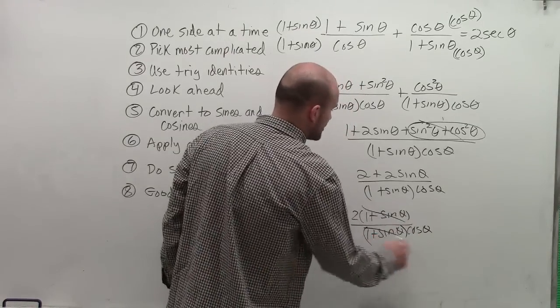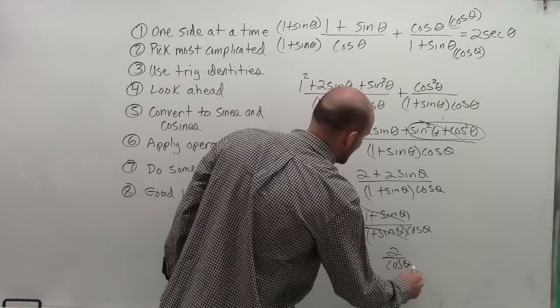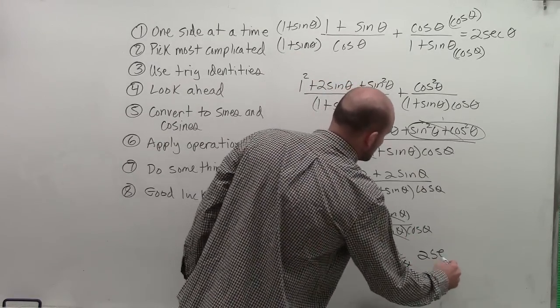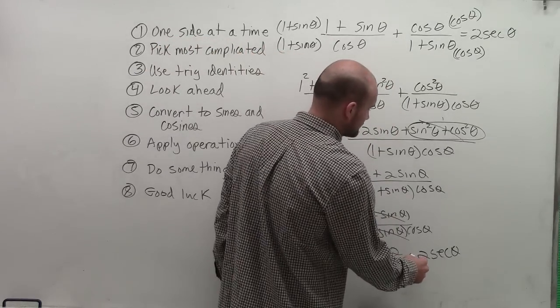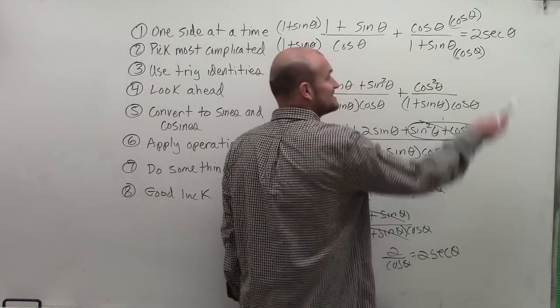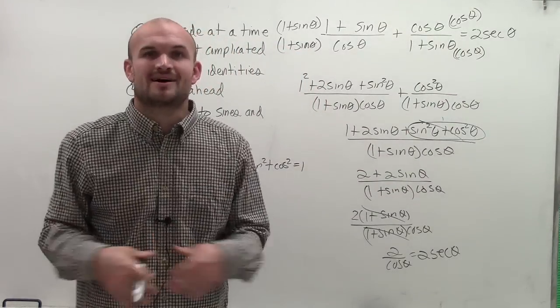leave me with 2 over cosine of theta, which can be written as 2 times secant of theta. And then we look at our left side, and we say, is that the same as our right side? And yes, it is. So therefore, our equation has been verified. Thanks.